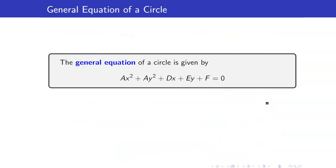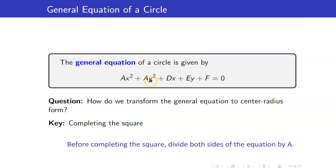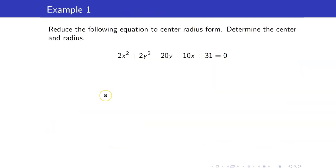The general equation of a circle means you put all constants and terms on one side so that one side equals 0. To transform the general equation of a circle to center-radius form, the key is completing the square. However, when completing the square, make sure you remove the coefficients of X squared and Y squared by dividing everything by that coefficient. For example, we want to reduce the following equation to center-radius form to determine the center and radius.